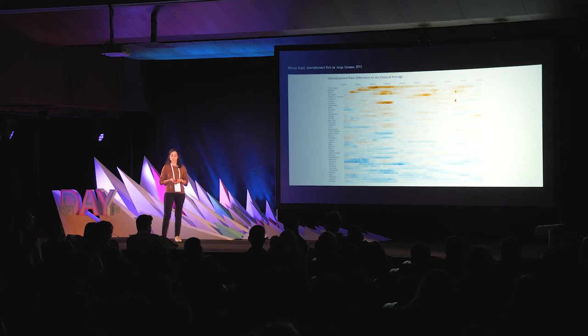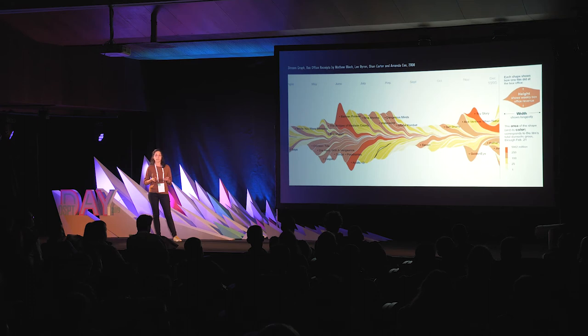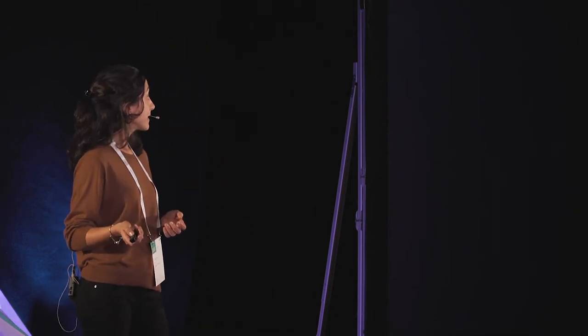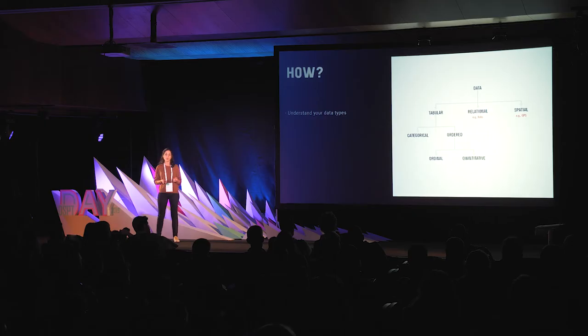This is an horizon graph, which is a really recent technique, and this is a stream graph. So how do we apply these visualization techniques? First, we need to understand our data types. They can be of various types, but the most common are categorical, ordinal, and quantitative.